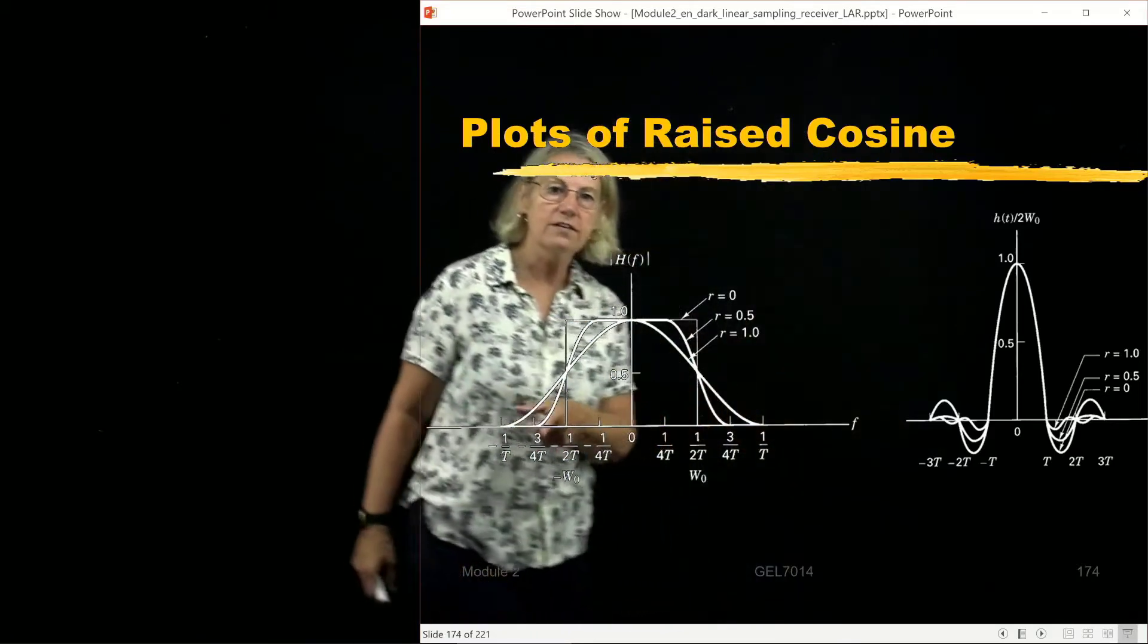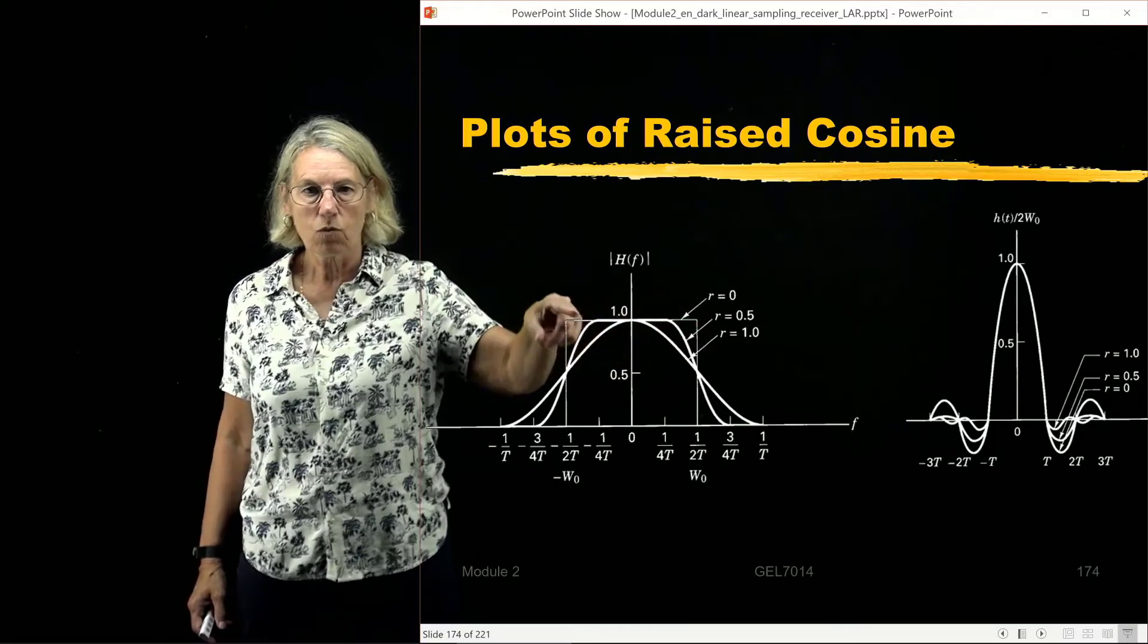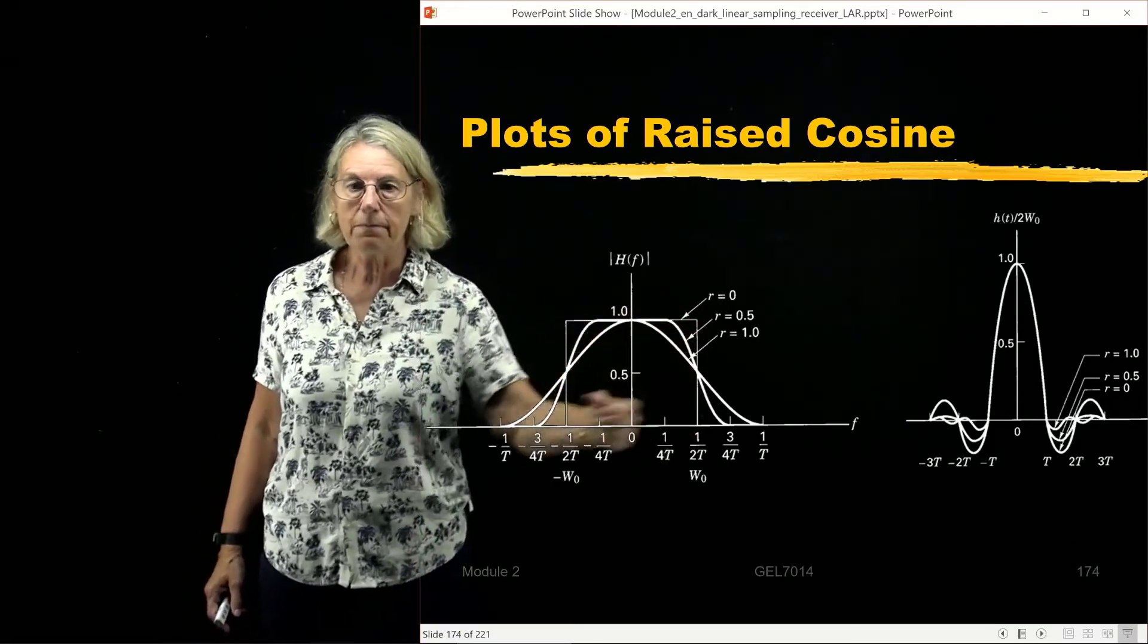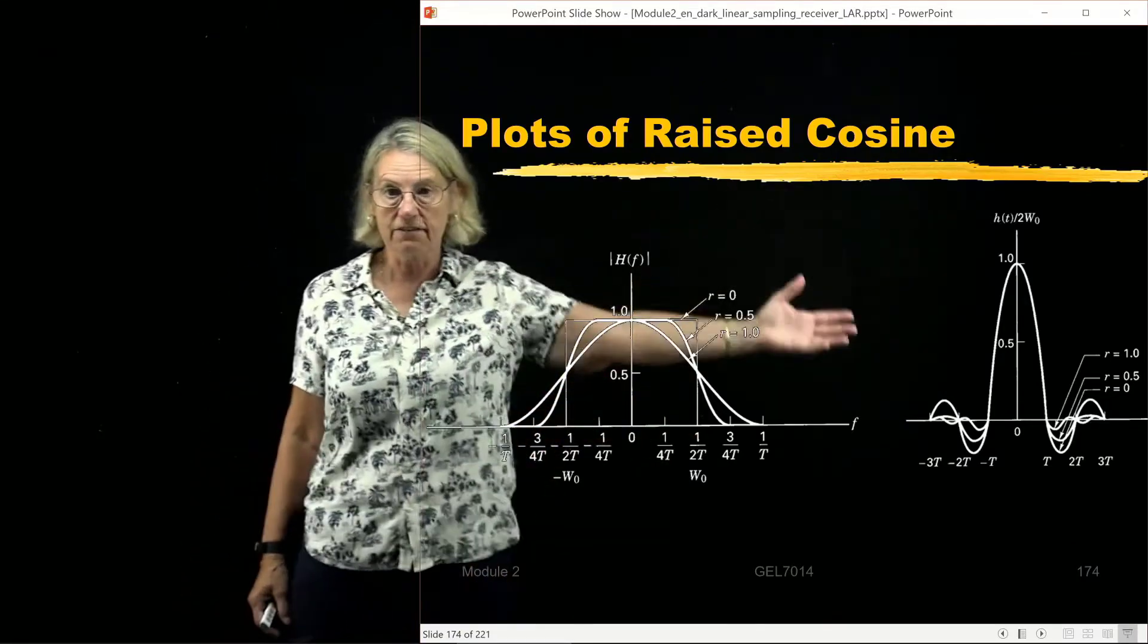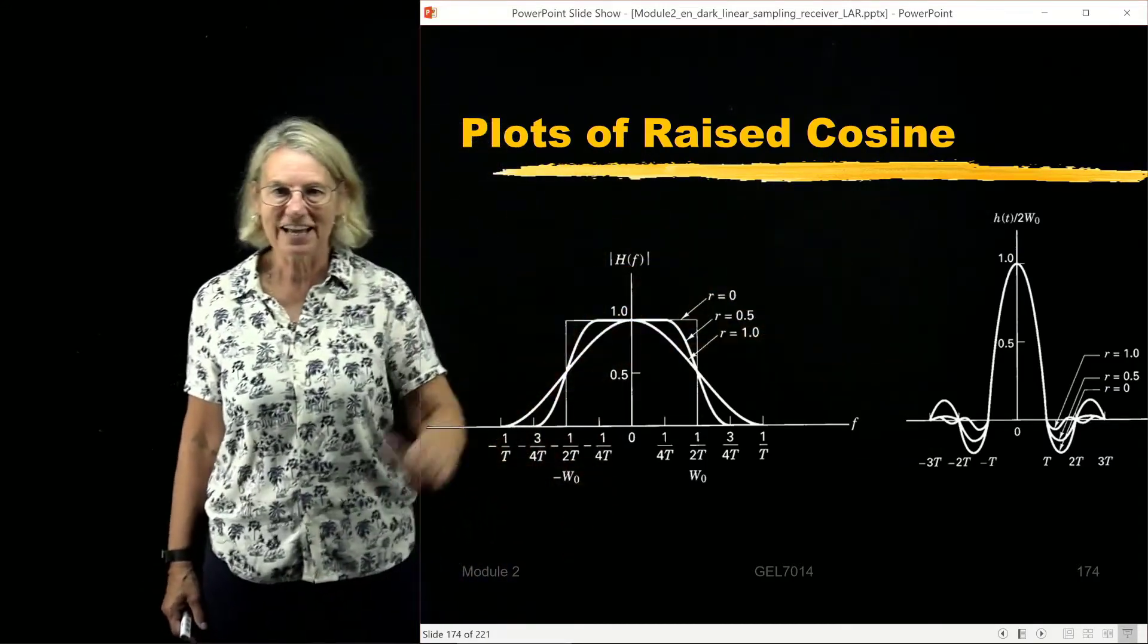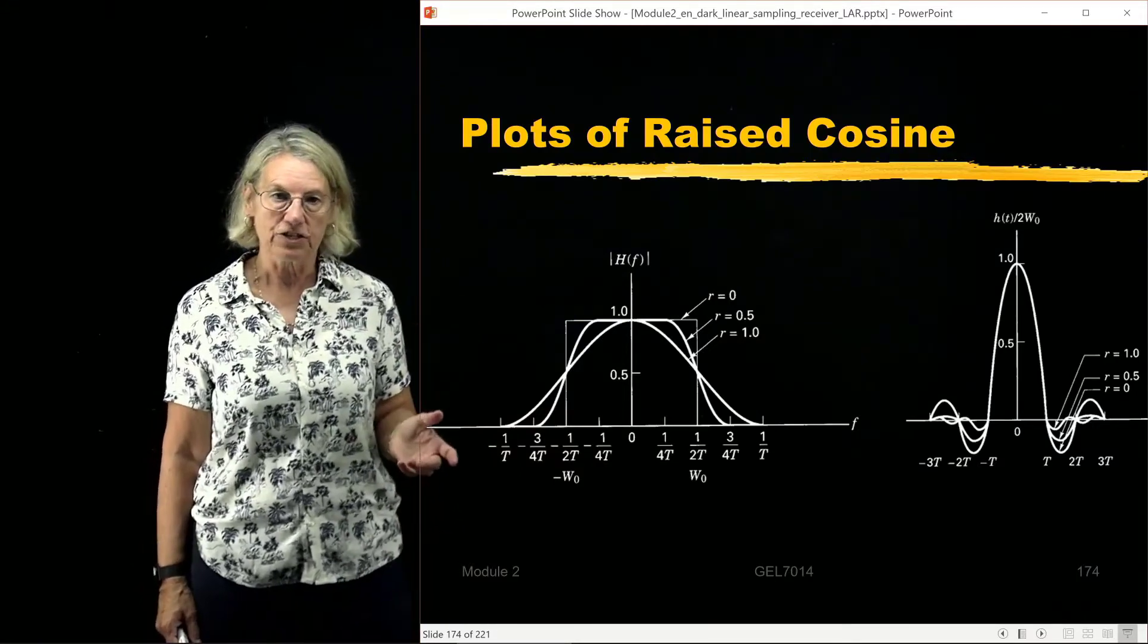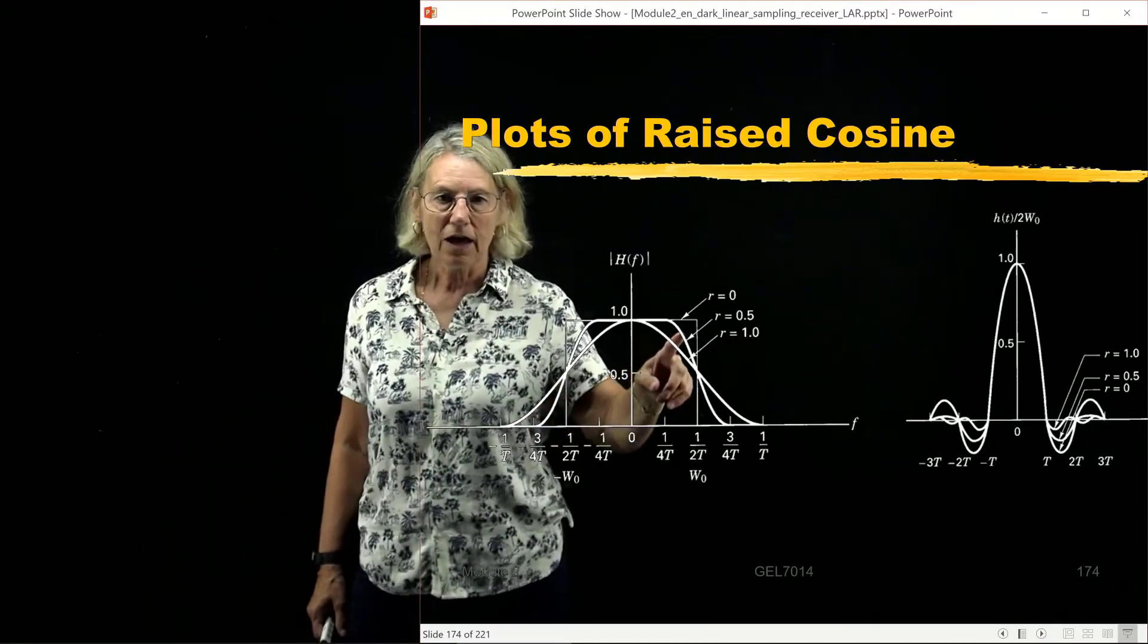Now let's look at the frequency domain. We can see now that R equals zero, I have this rectangular shape in the frequency domain, because if I have a sinc function in the time domain, I have a rectangle in the frequency domain.